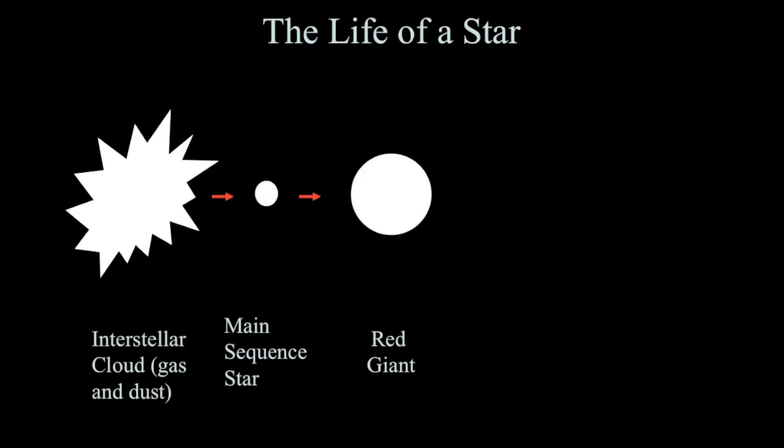To summarize, a star forms from an interstellar cloud of gas and dust, collapses into a main sequence star, spends most of its life as a main sequence star, and then becomes a red giant — the details of which were covered in this video. What happens after the red giant stage depends on the star's mass, with low mass and high mass stars having different outcomes.